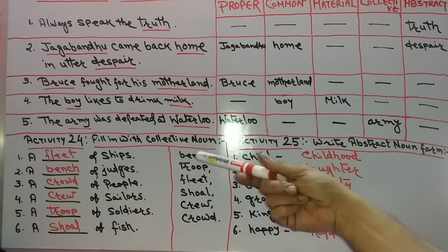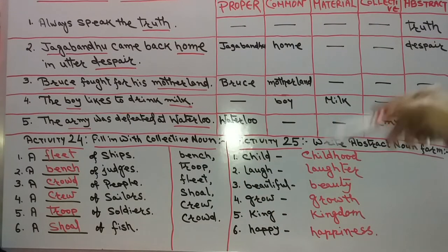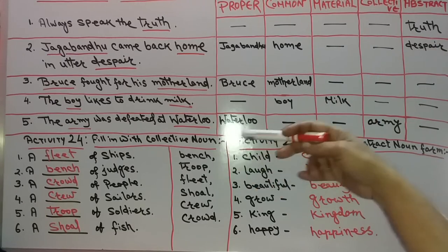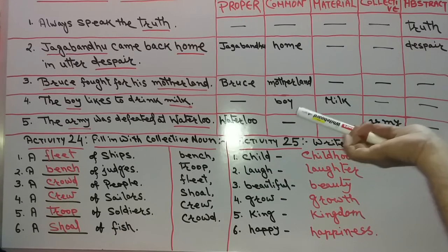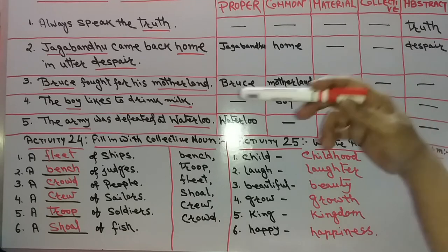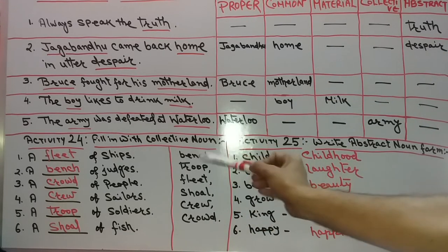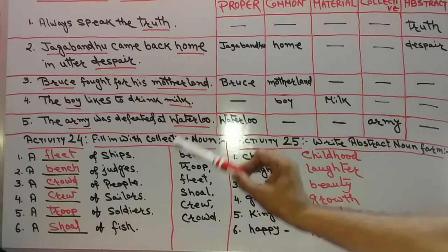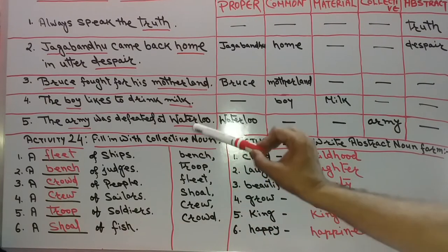A blank of ships — a fleet of ships. Ships group is called fleet. Fleet of ships. A bench of judges — jury of judges and bench of judges are both collective nouns for a group of judges.